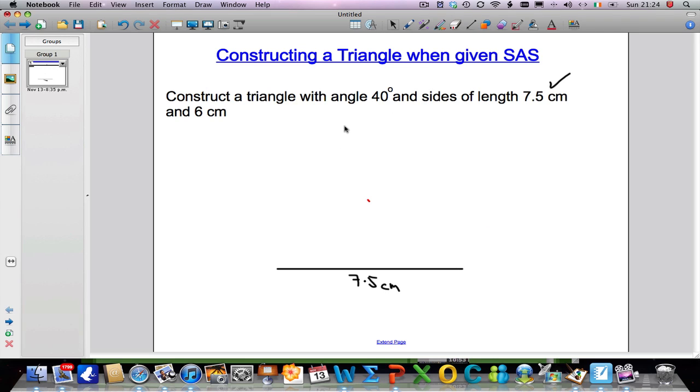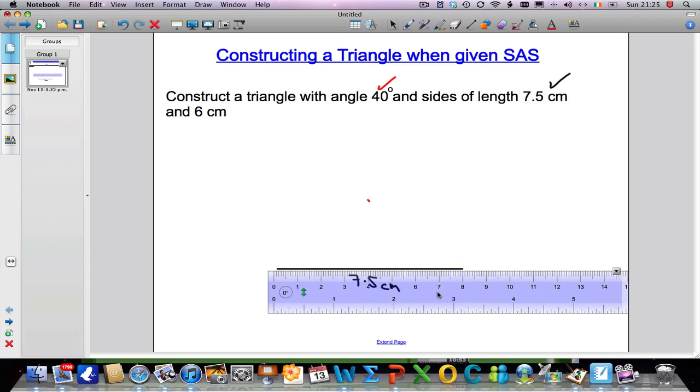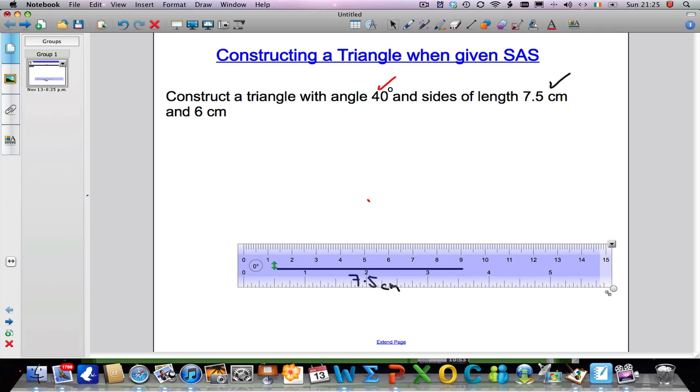The last thing we have to do is I now need a line that's 6 cm long and it's going to go through this point here. So we've got to take our ruler out again. Let's take the ruler out. I'm going to make sure first of all that the ruler is the same length that it was earlier, otherwise it won't look right.